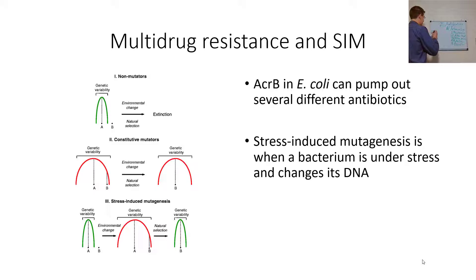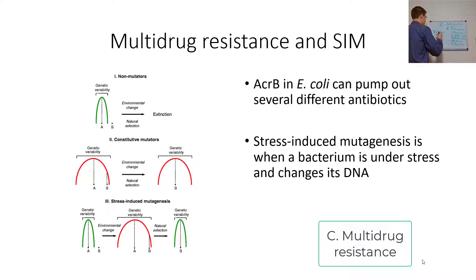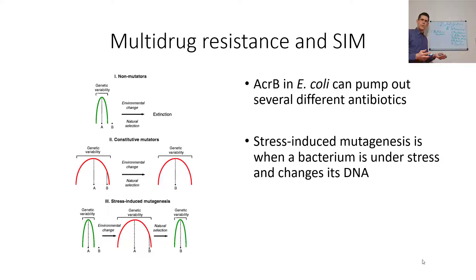Last up — multidrug resistance. Why stop at penicillin resistance? A pump can pump out multiple different antibiotics that look like penicillin, such as ampicillin. Things that pump out tetracycline might pump out similar compounds. Reducing the substrate specificity of an efflux pump means it can now pump out more things — giving bacteria resistance to multiple antibiotics simultaneously.